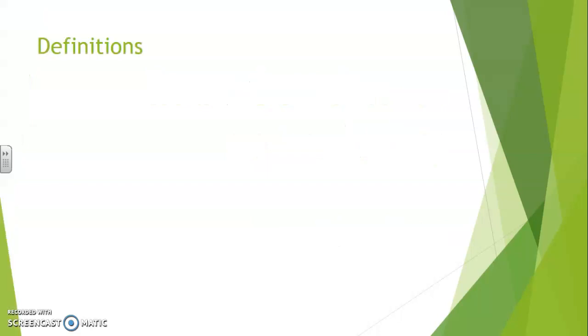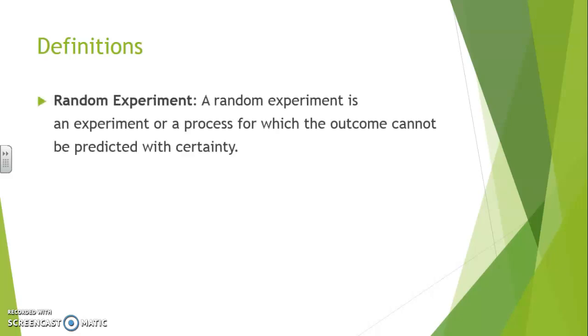Here are a few definitions that we'll have to use throughout the probability section. First of all, a random experiment. A random experiment is an experiment or a process for which the outcome cannot be predicted with certainty.